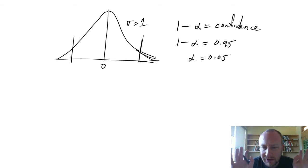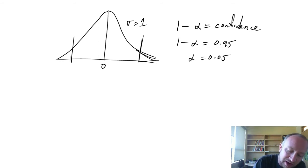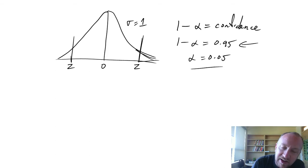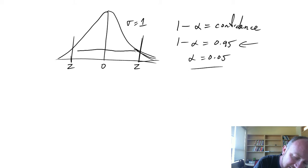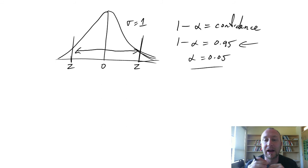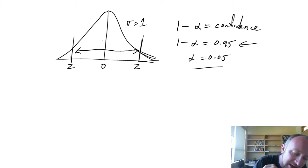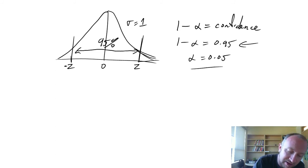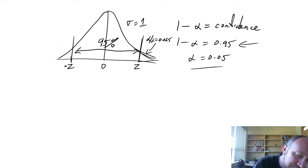This allows us to define the region of our normal distribution that we're interested in. For a 95% confidence interval, I want to define an area such that if I draw a number at random from the standard normal distribution, 95% of the time I'll draw an observation between those two Z values. The area in each tail is alpha divided by 2, which is 0.025, and we denote these Z.025 and Z.025.